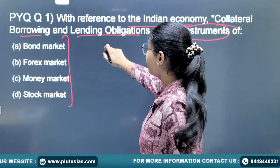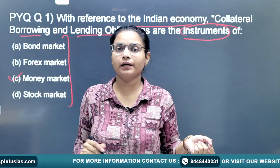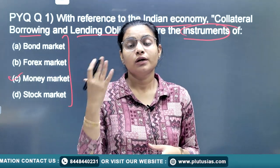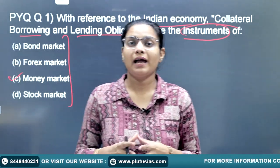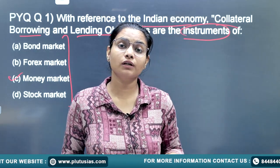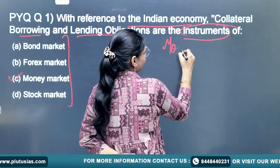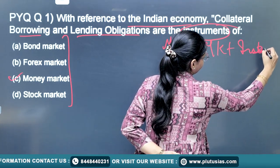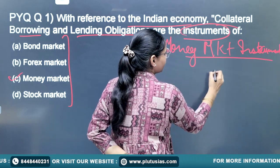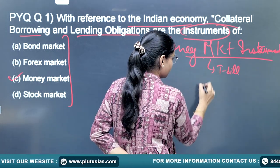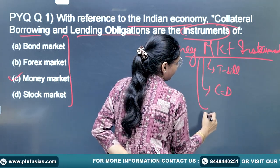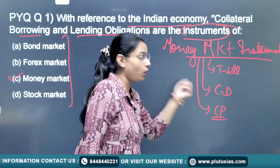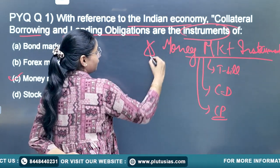The answer is money market. In past years there were questions on money market instruments — for example, Treasury Bills, Commercial Paper, and Certificate of Deposits have all been asked. These are a few of the money market instruments already asked. You need to read other money market instruments as well.